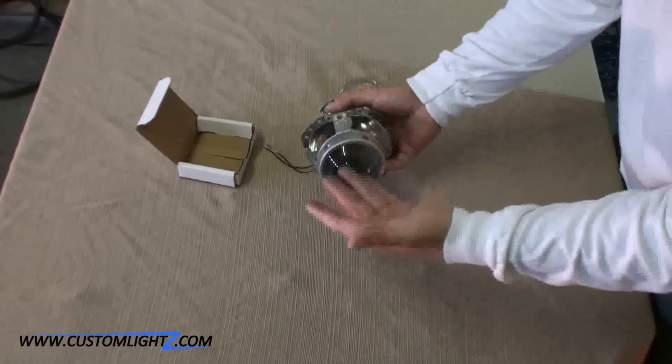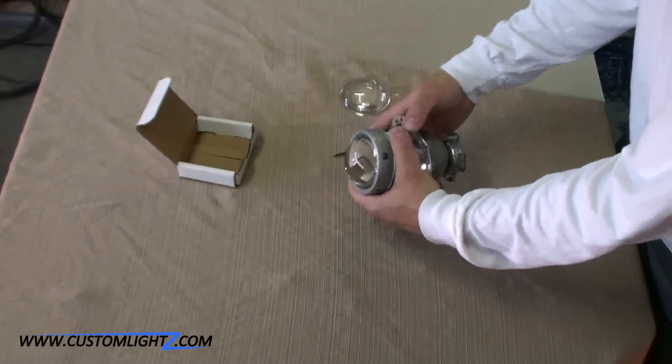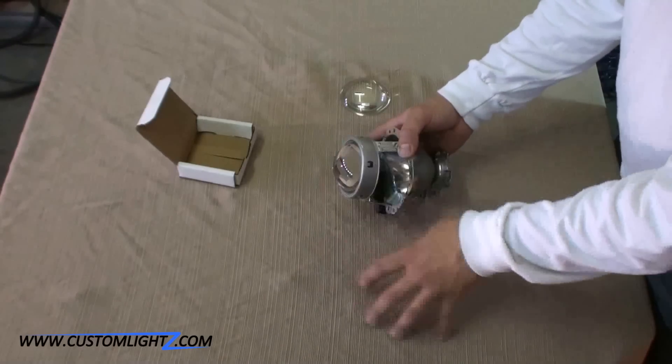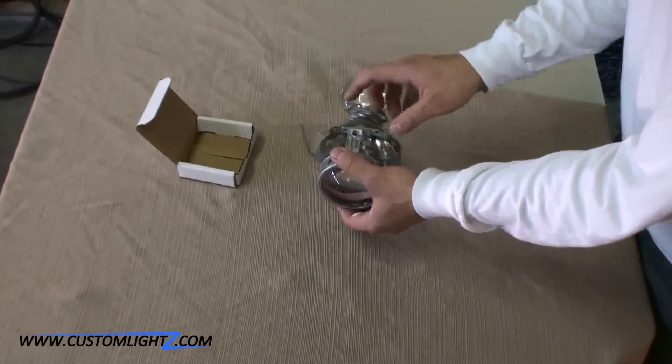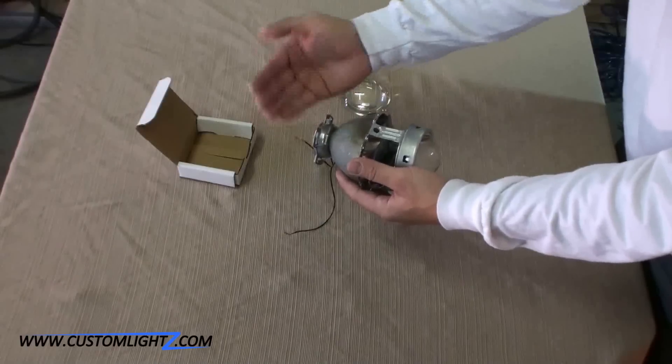So once the lens has been swapped, you put the bulb and you fire everything up. Normally, you will see that the cutoff has become a whole lot sharper. But if you want to enhance it and bring more color, you do need to bend the shield. And you will need to bend it backwards or towards the back of the bulb.